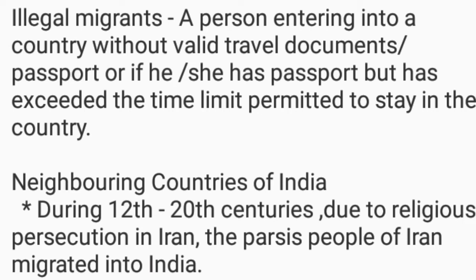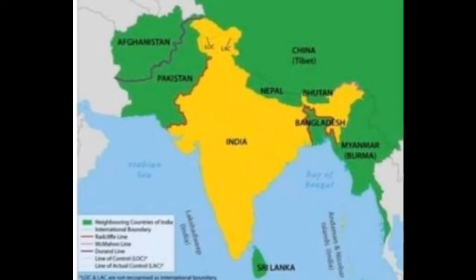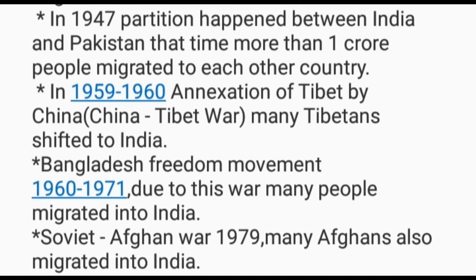Now let us see about the neighboring countries of India. During the 12th to 20th centuries, due to religious persecution in Iran, the Parsi people migrated into India. India's neighboring countries include Afghanistan, Pakistan, China, Bhutan, Bangladesh, and Burma (Myanmar). In the year 1947, partition happened between India and Pakistan, and more than one crore people migrated to each other's country. Similarly, in 1959 to 1960, the annexation of Tibet by China caused many Tibetans to shift to India.